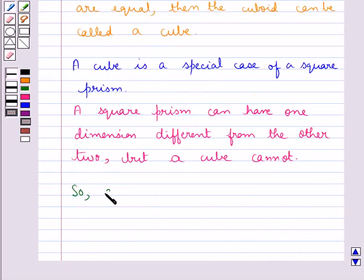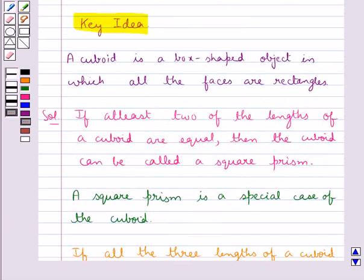So, a square prism is not same as a cube, and from the definition of the cuboid, we can also say that a square prism can also be a cuboid.